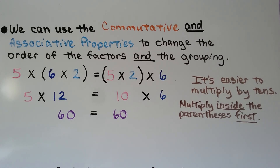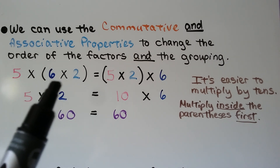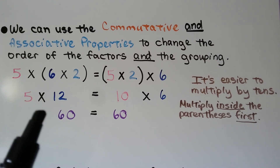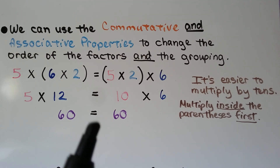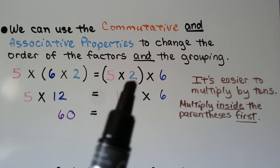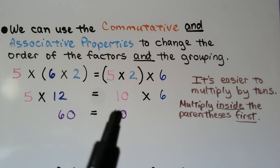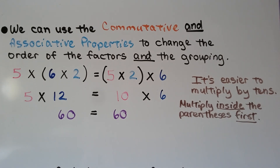We can use the commutative and associative properties to change both the order of the factors and the grouping. Here we have 5, 6, and 2. Parentheses are done first, so we have 6 times 2, which equals 12, and then 5 times 12 equals 60. But it might be easier to group the 5 and the 2 together first: 5 times 2 is 10, and then 10 times 6 is 60. It's easier to multiply by tens.